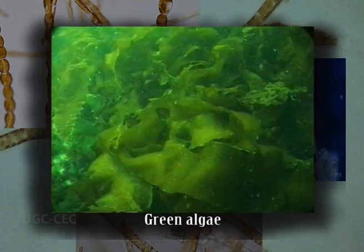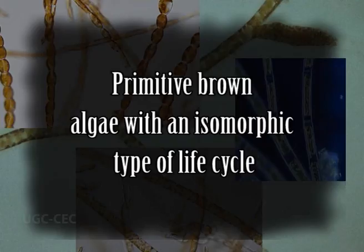They resemble the green algae in their cell wall structure with an inner wall of cellulose and an outer wall of pectin, but differ in wall composition, cellular contents, and structure of motile cells. Phylogenetically, Ectocarpus is one of the primitive brown algae with an isomorphic type of life cycle, in which the sporophyte and gametophyte generations are mostly identical in appearance.